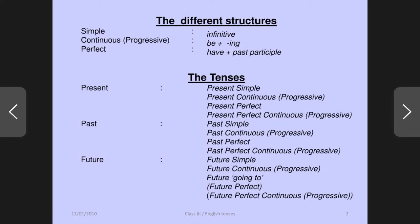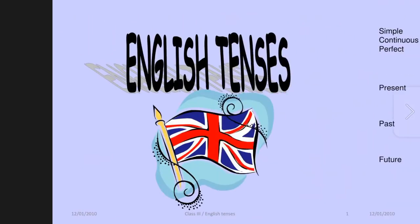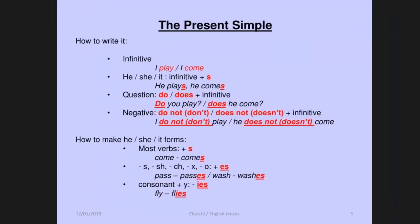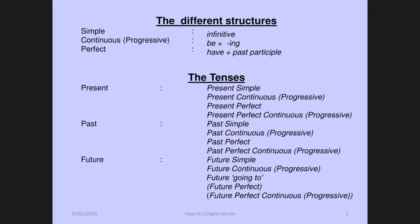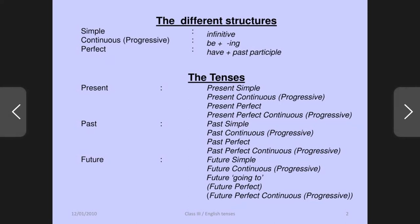And in perfect form, we have have/has plus past participle. So different structures we have for all three tenses — present, past and future — we have simple, continuous (means progressive), and perfect.